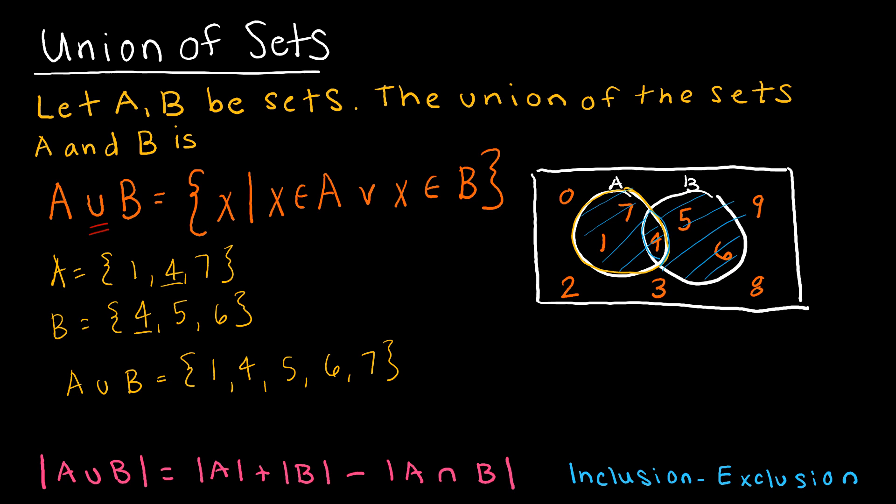So 1, 4, 5, 6, 7 would be all of the elements in the union. So we're looking for anything that is in one or the other. So again, you can think of this as an or.